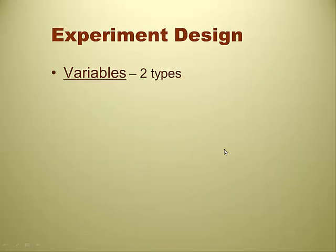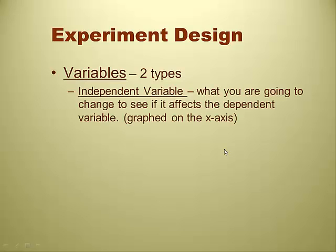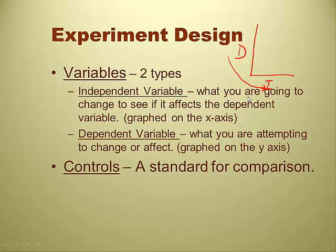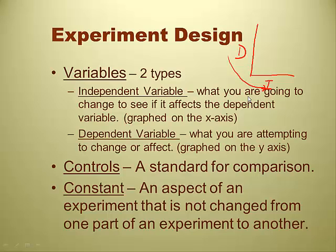Experiment design — know the definition and the differences between variables. There are two types of variables. The independent variable is what you are going to change to see if it affects the dependent variable; it is the variable you can manipulate, and it gets graphed on the x-axis. The dependent variable is what you are attempting to affect; it is usually graphed on the y-axis. A control is a standard for comparison. Constants are aspects of an experiment that are not changed from one part to another.